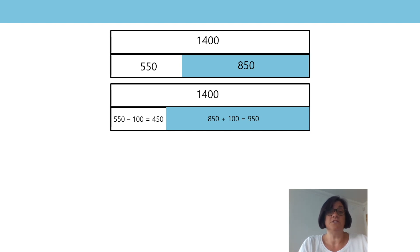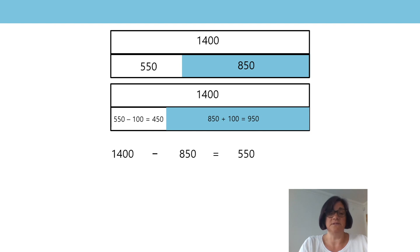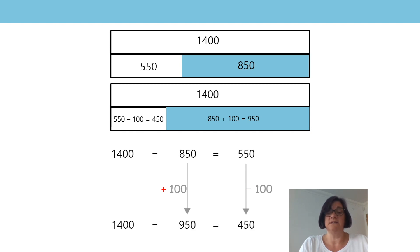Some of you might have chosen jottings to represent the problem. This is what my jottings look like. I like this way of solving the problem because it's really clear to see how the increase in the subtrahend must be balanced by a decrease in the difference. So if I add 100 to the subtrahend, I need to subtract 100 here, which gives me an overall difference of 450.